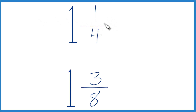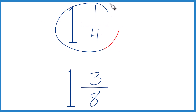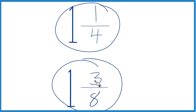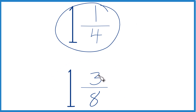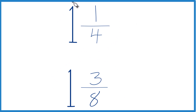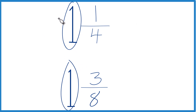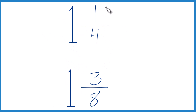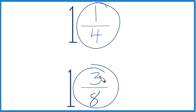Let's figure out which fraction is greater: one and one-fourth, or one and three-eighths. Here's how you do it. The whole number one is the same in both, so let's ignore that and focus on the one-fourth and the three-eighths.